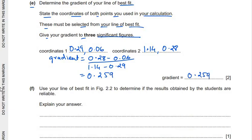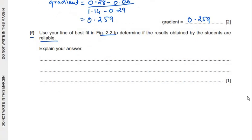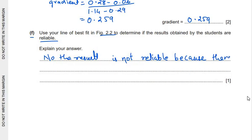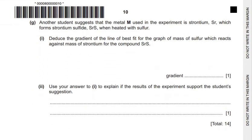The next question asks us to use the line of best fit in figure 2.2 to determine if the results obtained by the students are reliable. We can write that yes, the results are reliable because most of the points lie on the best fit line, or alternatively that the results are not fully reliable because there is one anomalous point.